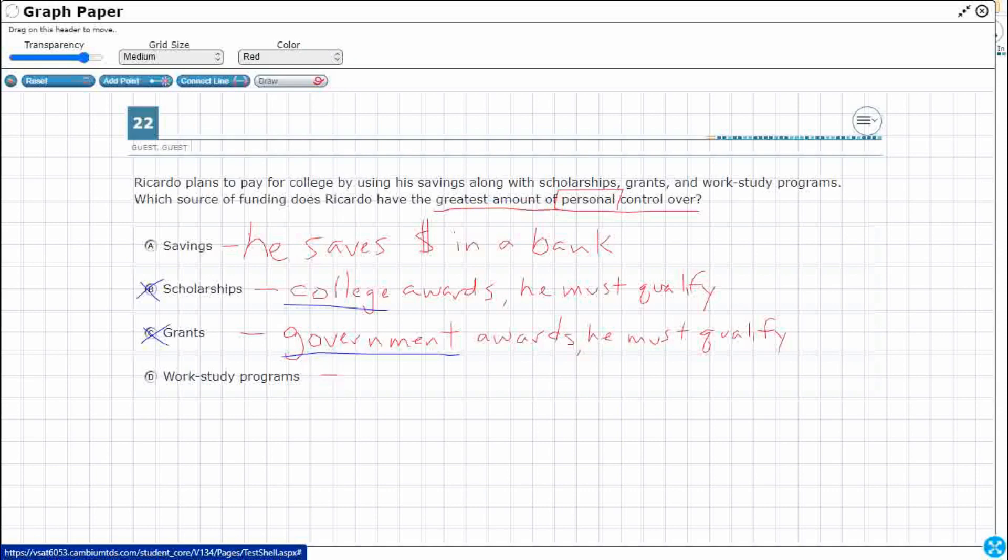Let's check out our work study programs. Okay. So work study program is something you have to apply for. And usually that's with the college. Okay. So the college, I won't say award because it's not like it's free money, but the college grants it.